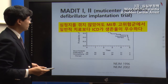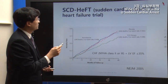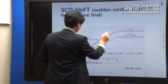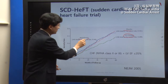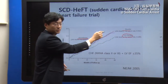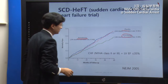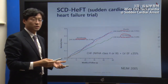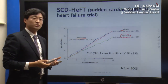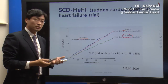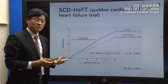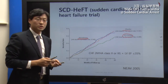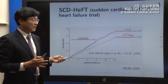The SCD-HeFT study compared three groups: ICD therapy, amiodarone, and placebo. The ICD therapy group had significantly lower mortality compared to both the amiodarone and placebo groups. This confirms through multiple trials that ICD is superior for patients with heart failure and low ejection fraction.